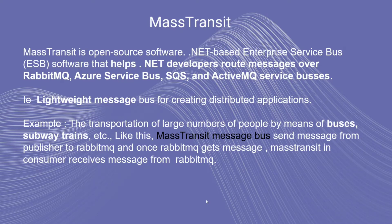MassTransit is a lightweight message bus for creating distributed applications. For example, like the transportation of large numbers of people by means of bus, subway trains, etc. — similarly, the MassTransit message bus sends a message from publisher to RabbitMQ, and once RabbitMQ gets the message, MassTransit in the consumer receives the message from RabbitMQ.